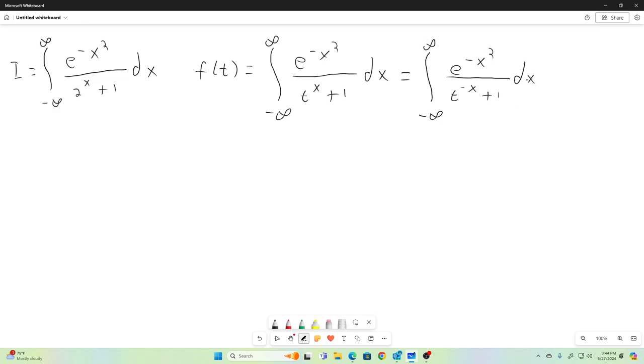And now I'd like to multiply the top and the bottom of this integral by t to the x. And what you'll get when you do that is this. You will just have t to the x here. And now you see that if we add these two versions of f of t together, we have this equation, that 2f of t is equal to the integral from negative infinity to infinity of t to the x plus 1 times e to the negative x squared over t to the x plus 1 dx.